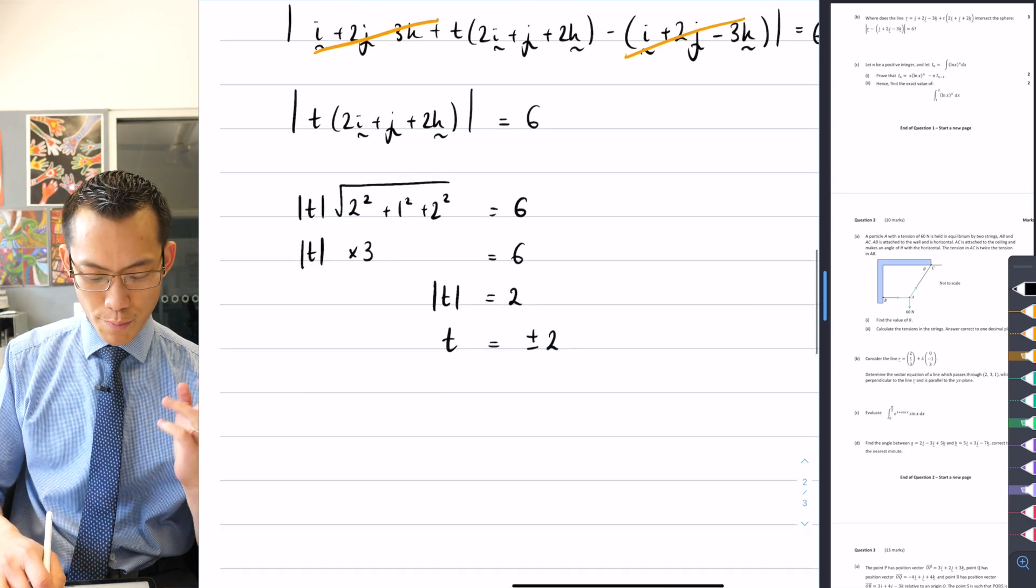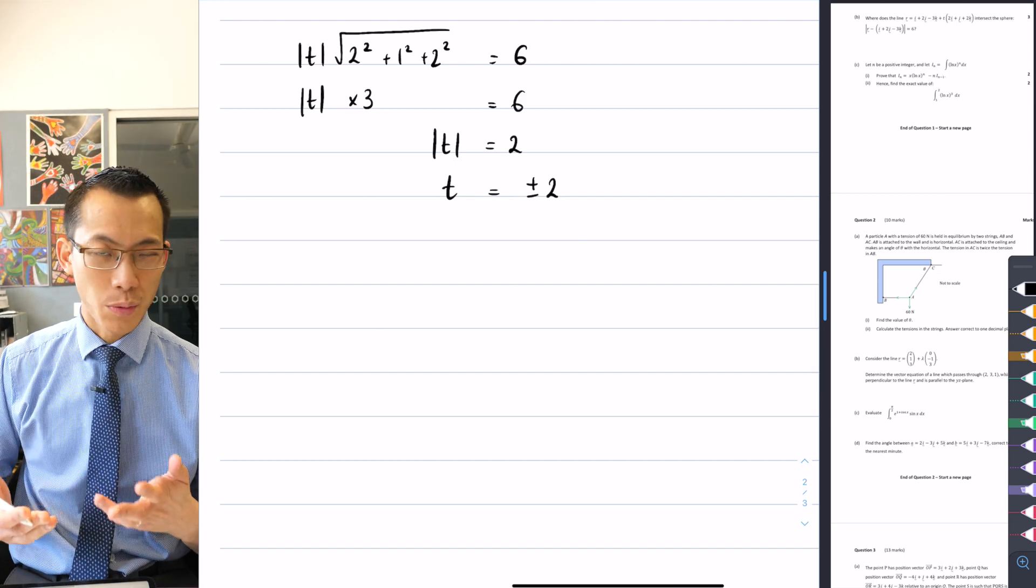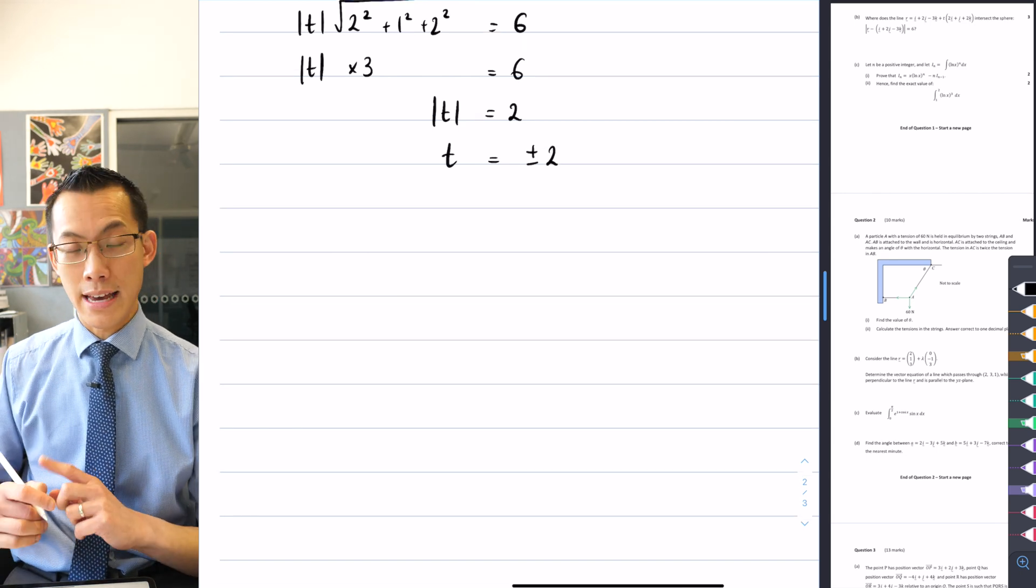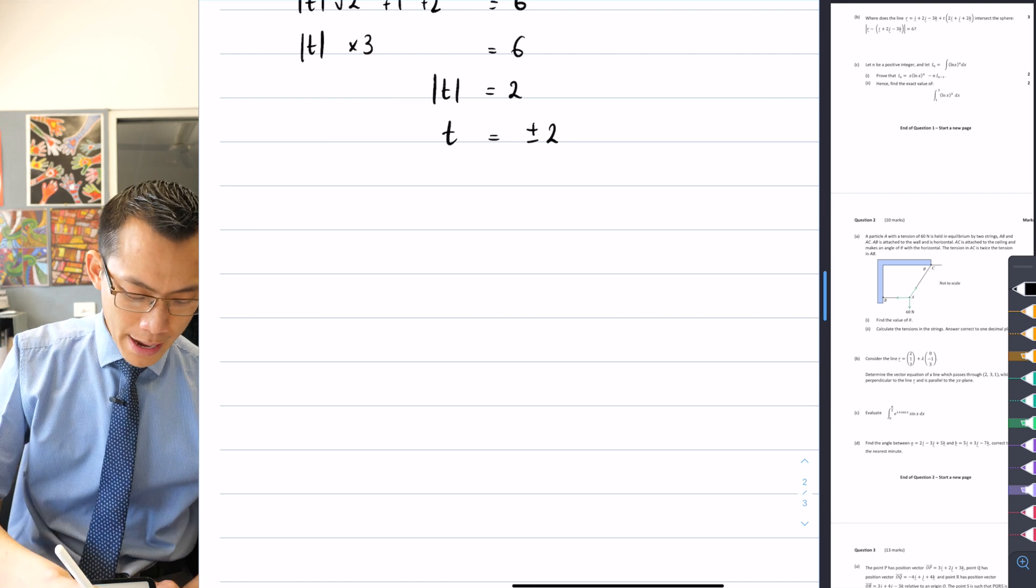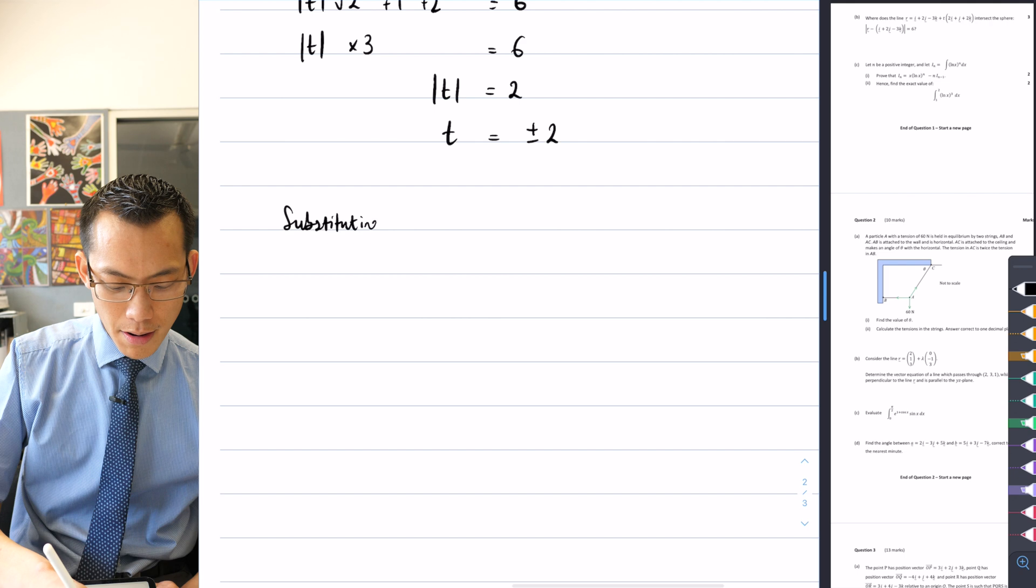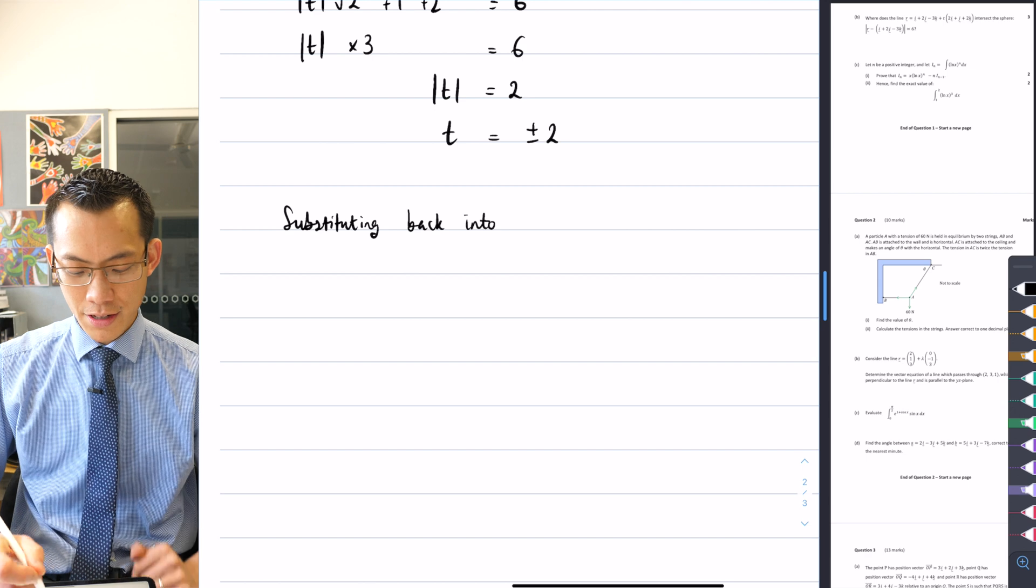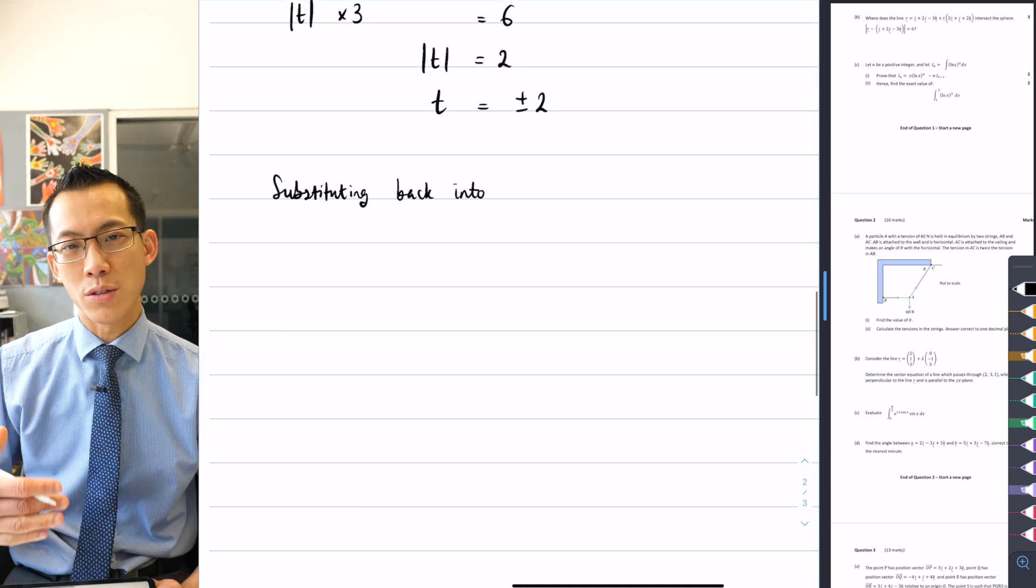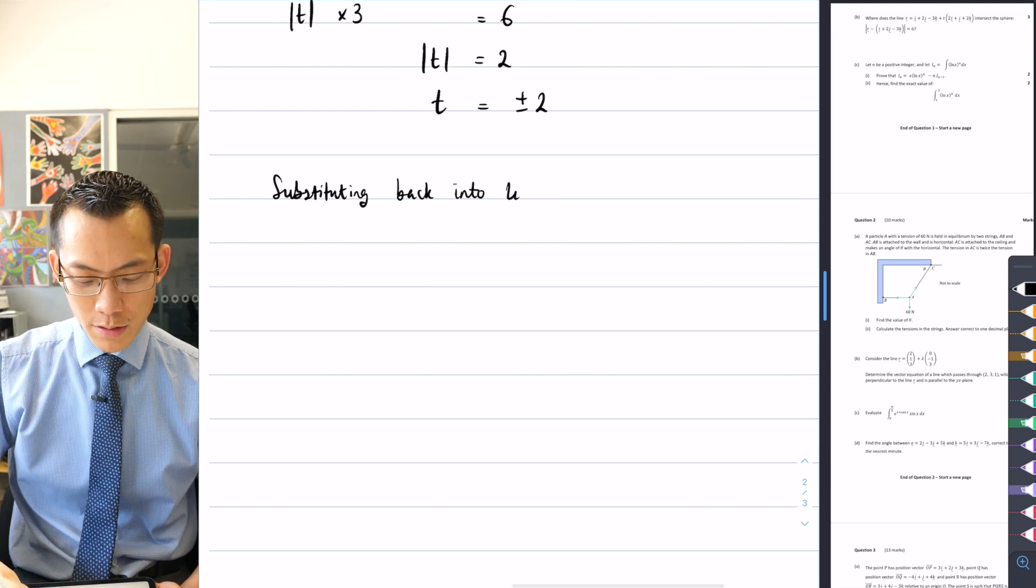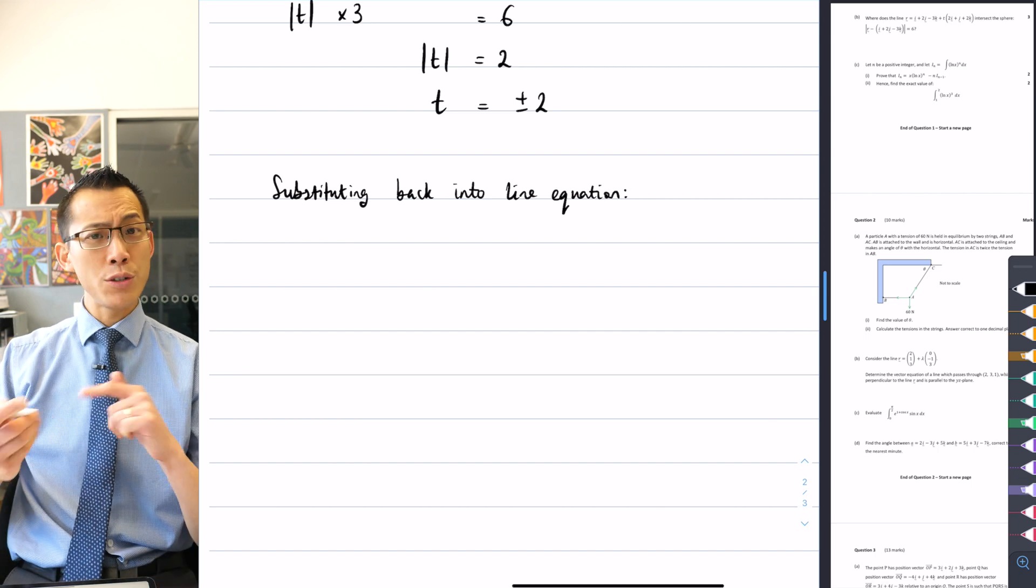So what I need to do is take these two parameters and pop them back into the line equation, because that's where t belongs. That should give me two coordinates, two points on the line that intersect with the sphere. So substituting back into the line equation, let's do t equals 2.